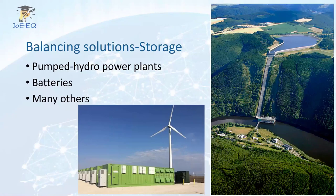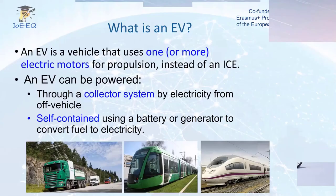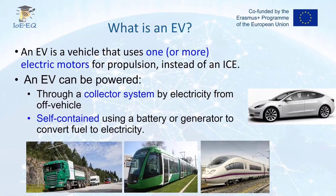In the following slides we will talk about how electric vehicles can contribute to supporting the electric grid. At the beginning is the definition: what is an electric vehicle? An electric vehicle is a vehicle that uses one or more electric motors for propulsion instead of an internal combustion engine. Electric vehicles can be powered using a collector system like in trains or trams, or they can be self-contained using a battery or a generator to convert fuel to electricity — for example, using a fuel cell for propulsion.